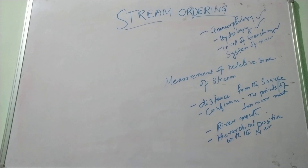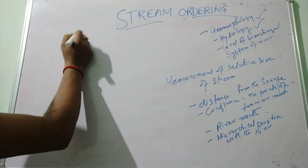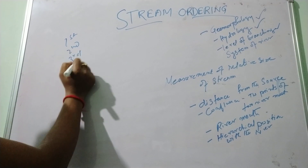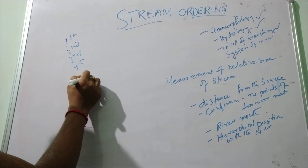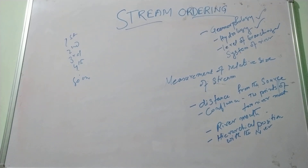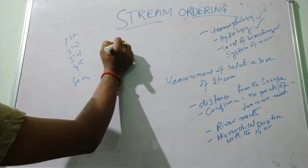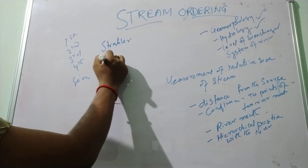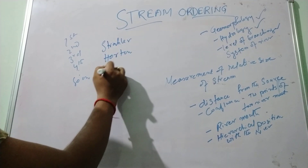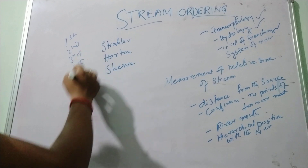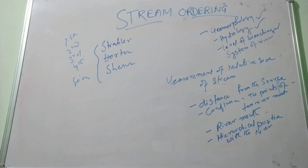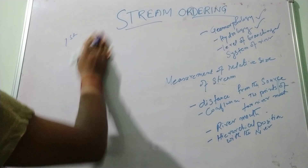Based on the ordering, the stream may be classified as the first order, second order, third order, fourth order, and so on. There are several geomorphologists and hydrologists who have given definitions or classifications of the concept of stream ordering, such as Strahler, and we will discuss each of their concepts regarding stream ordering and classification of the stream.